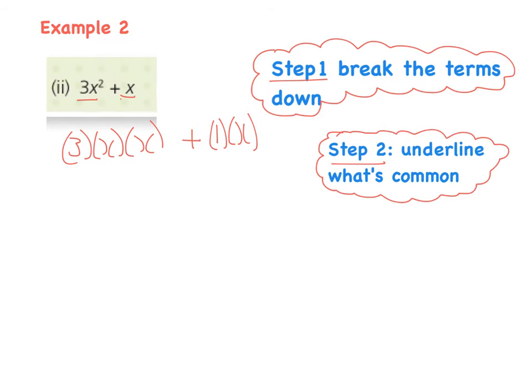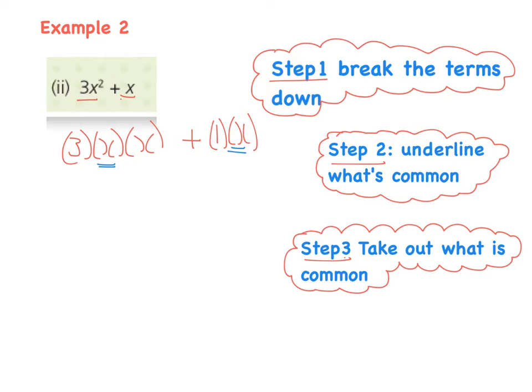Step 2, underline what's common. So common in both, I have an x. And step 3, the final one, is take out what's common. So I'm going to take that out, take out my x, and I'm left with 3 bracket x plus x bracket 1.